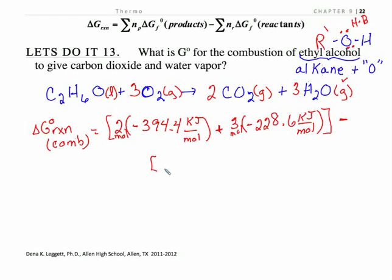Now we're going to take away our reactants. We have one ethanol and it's minus 174.8 kilojoules per mole, plus three times our oxygen. Well, just like delta H, elements in their natural state of matter at standard ambient temperature and pressure are zero. Not true for entropy, very true for our delta H and our delta G.